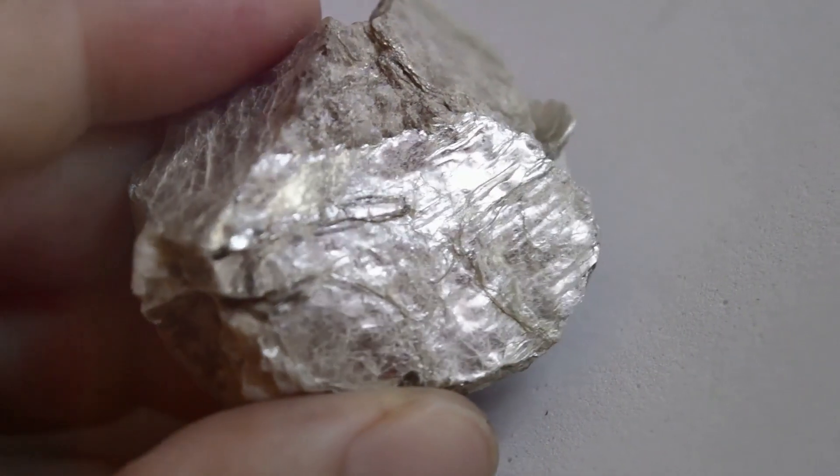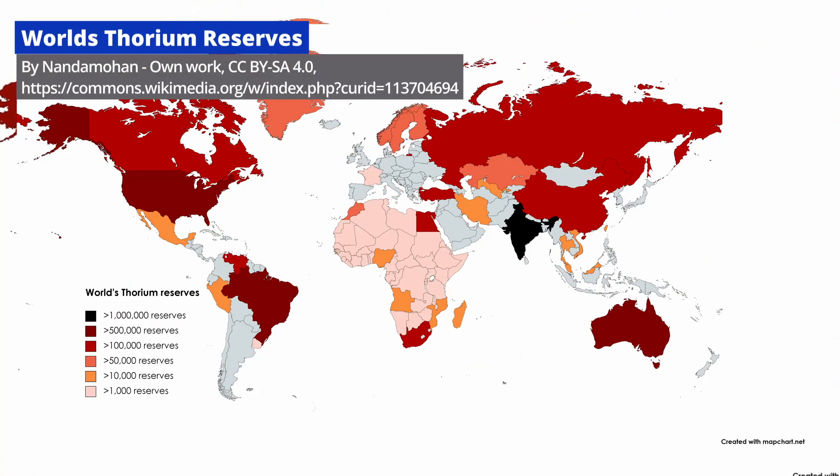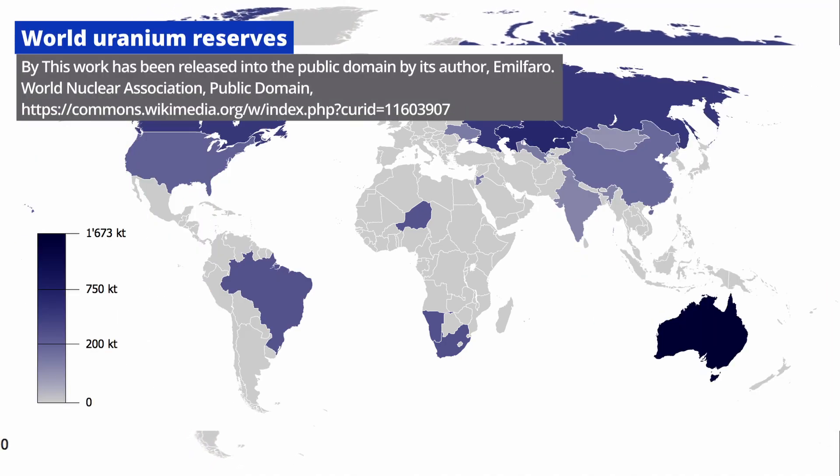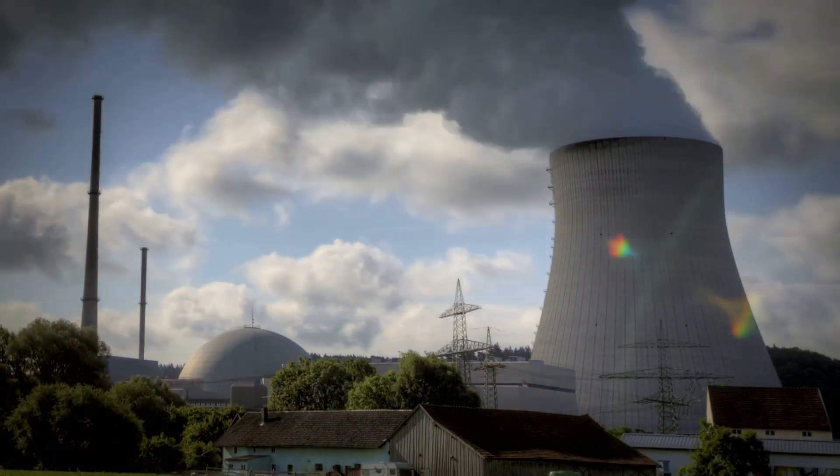Thorium is a naturally occurring radioactive element found in plentiful supply. Unlike uranium, thorium is more abundant and has some intriguing properties that make it appealing for nuclear energy.